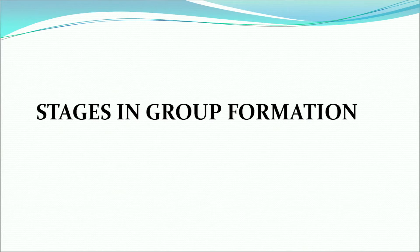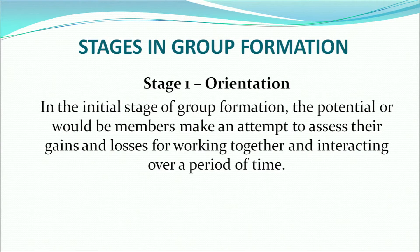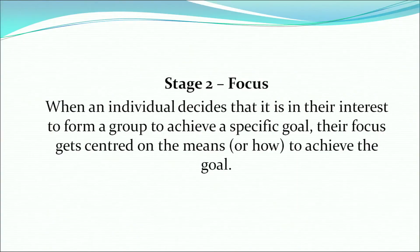How are groups formed? Initially, the first stage is orientation. In this stage of group formation, the potential or would-be members make an attempt to assess their gains and losses for working together and interacting over a period of time. When a person feels that their needs are similar to the needs of other people, they are oriented or have an inclination towards the other member. The second stage is focus. When individuals decide that it is in their interest to form a group to achieve a specific goal, their focus gets centered on the means to achieve that goal.